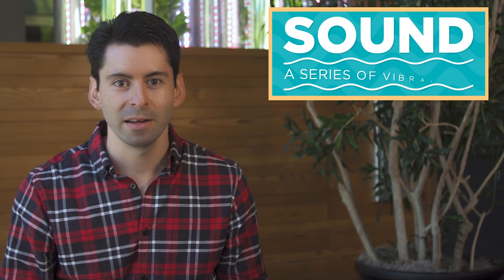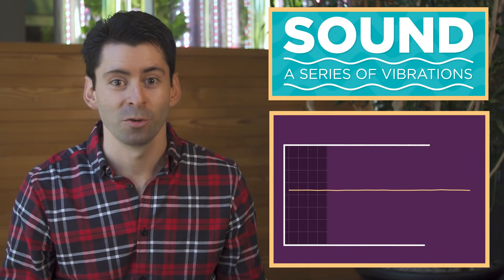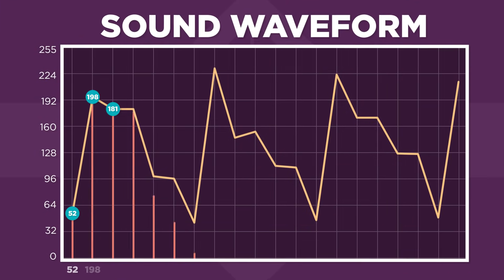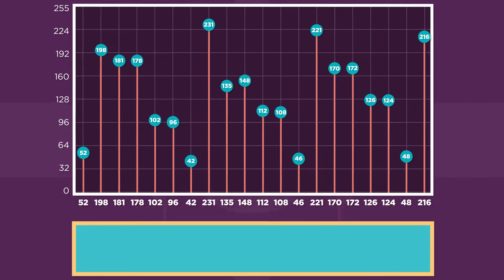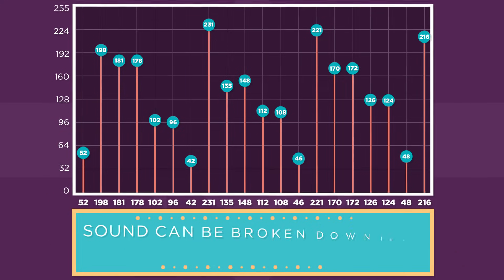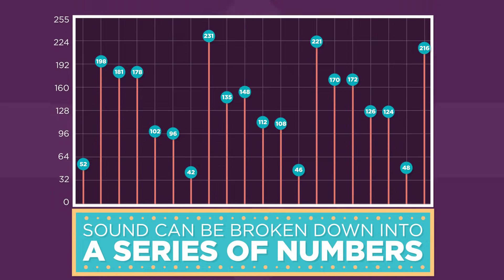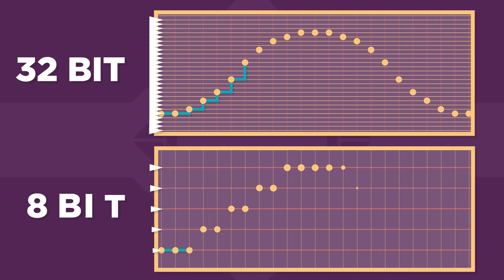Every sound is basically a series of vibrations in the air. Vibrations can be represented graphically as a waveform, and any point on this waveform can be represented by a number. This way, any sound can be broken down into a series of numbers. If you want higher quality sound, you would pick 32-bit audio over 8-bit audio — more bits means a higher range of numbers.